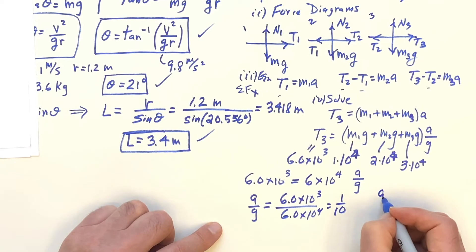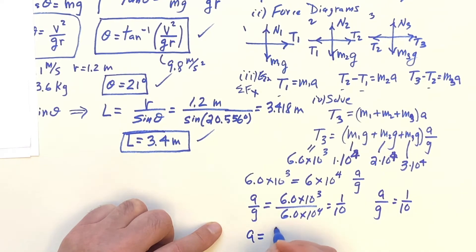So A over G is 1 tenth. So that means A is 1 tenth of G, which is 1 tenth of 9.8, which is 0.98 meters per second squared. That's cool.